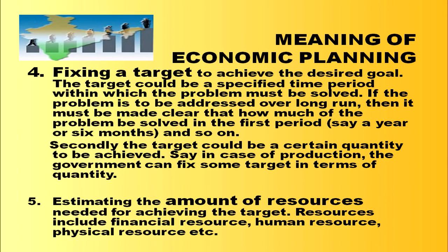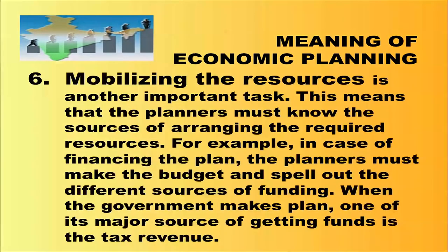The target could be a specified time period within which the problem must be solved. If the problem is to be addressed over the long run, it must be made clear how much of the problem will be solved in the first period, say a year or six months. The target should also be a certain quantity to be achieved — for example, in production, the government can fix a target in terms of quantity. The fifth step is to estimate the amount of resources needed, including financial, human, and physical resources.